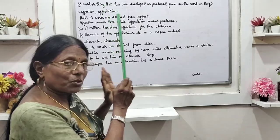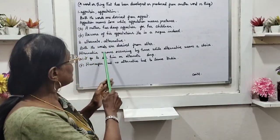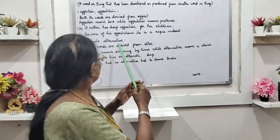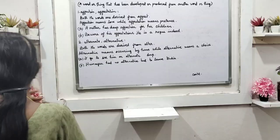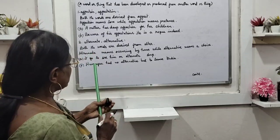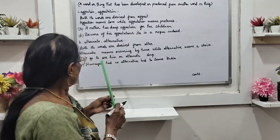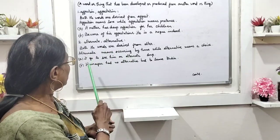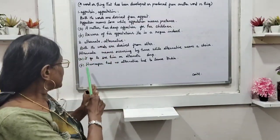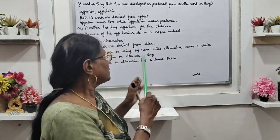The next pair is alternate and alternative. Both words are derived from the word 'alter.' Alternate means occurring by turns, while alternative means a choice. For example: 'I go to see him on alternate days.' And: 'Humayun had no alternative but to leave India.'